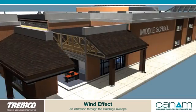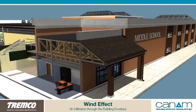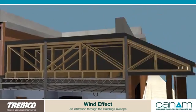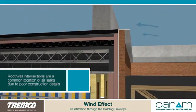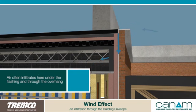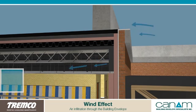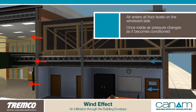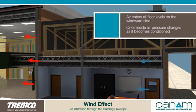Roof-wall intersections are a common location of air leaks due to poor construction details. Air often infiltrates here under the flashing and through the overhang.